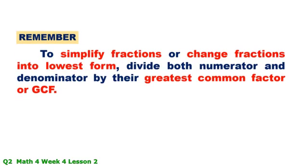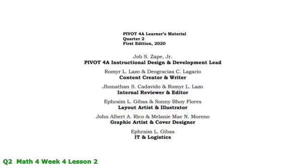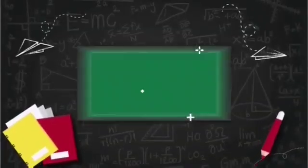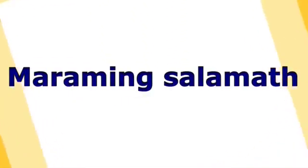Remember: to simplify fractions or change fractions into lowest form, divide both numerator and denominator by their greatest common factor or GCF. When the GCF of both numerator and denominator is 1, the fraction is in its lowest term. Thank you.